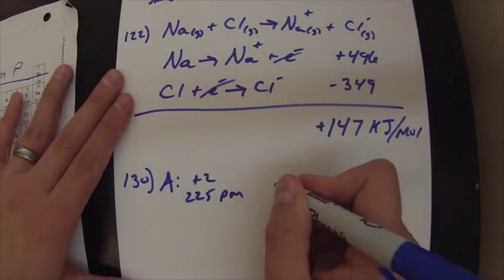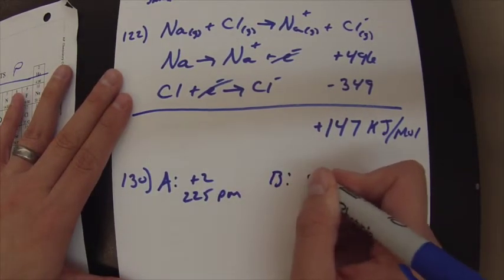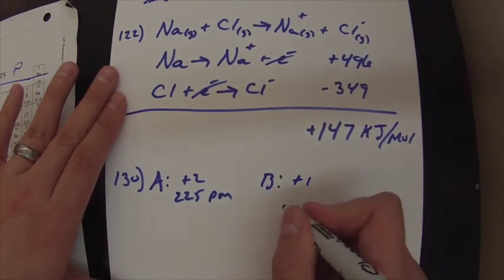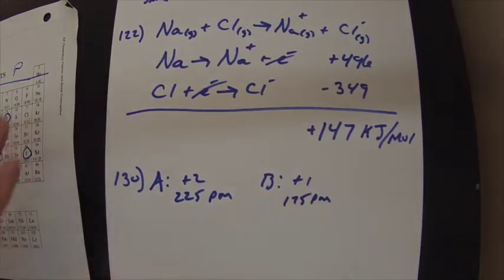Whereas atom B has an effective nuclear charge of plus 1, but it's only 175 picometers away. And the question is, which has the highest first ionization energy explained?